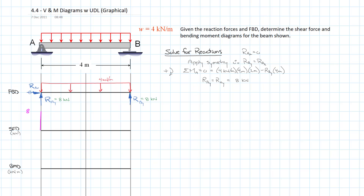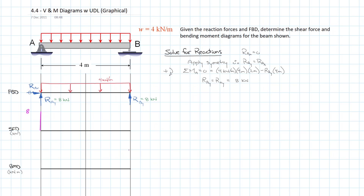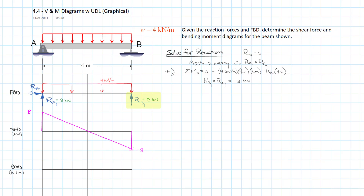The change in our shear force diagram equals the area under the load intensity diagram: 4 kilonewtons per meter multiplied by 4 meters gives a change of 16. So we start at 8 and minus 16 takes us to negative 8 at point B. Since the load intensity is constant, the shear force diagram has a slope of negative 4 — a straight line connecting positive 8 to negative 8. At point B, the reaction BY of 8 kilonewtons brings us back to zero, which is correct since we must start and end at zero.